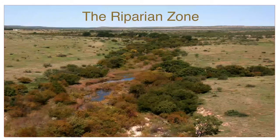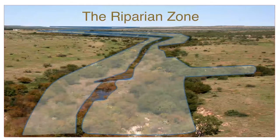This is a term that has really only come into common usage in Texas in the past 10 to 15 years, even among land management professionals. A riparian area or zone is the part of the landscape that rivers and streams flow through, shown in blue on this picture.